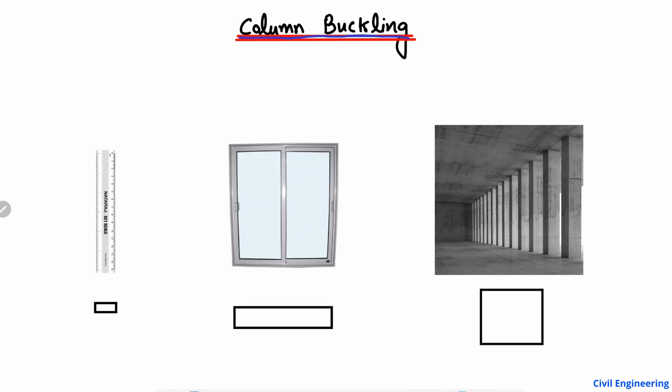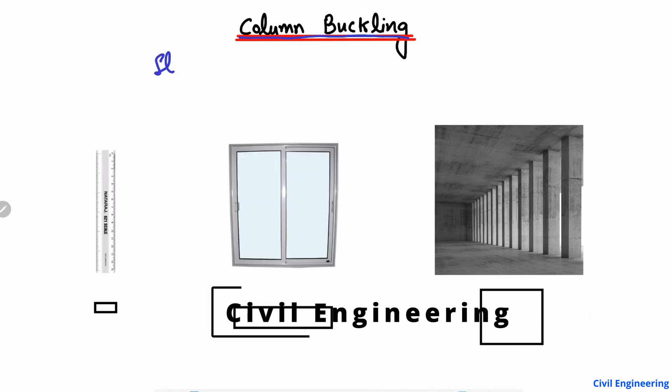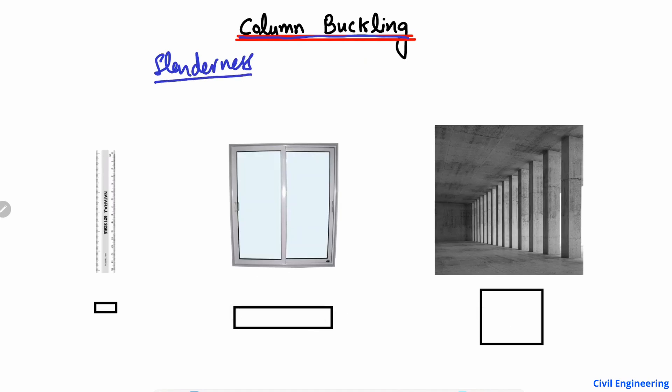Before going into the buckling of columns, it's very important to understand what is slenderness, and what are the factors that affect the slenderness of a column. To explain slenderness, let's take an example using these three images. The first one is a scale — used to measure small dimensions.